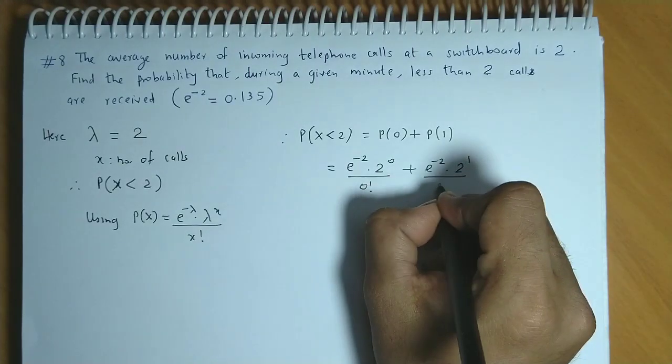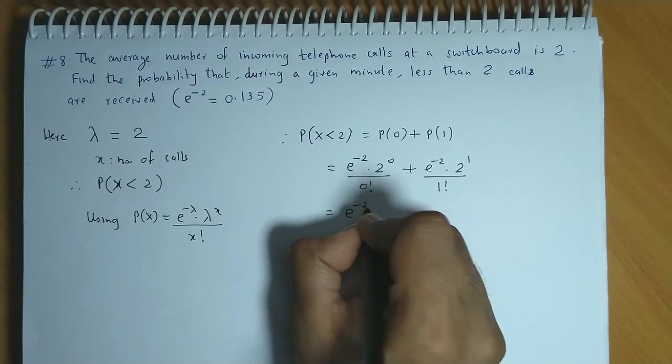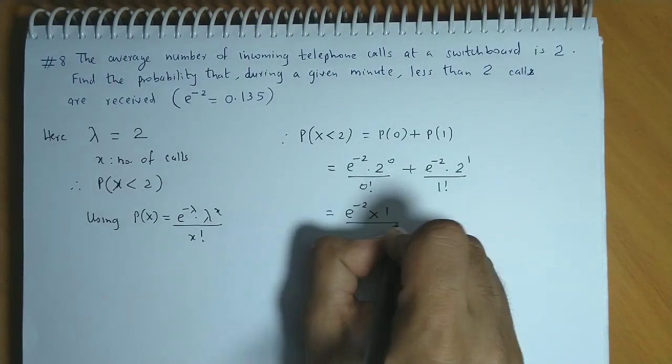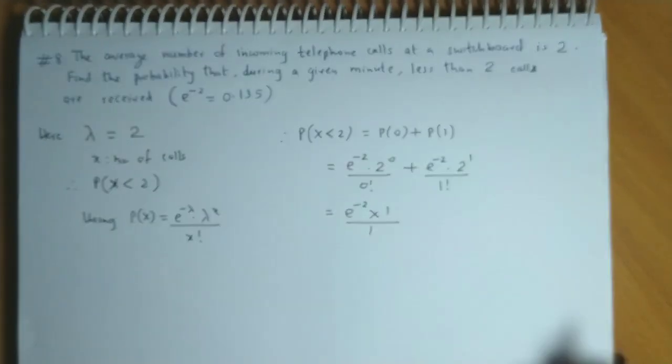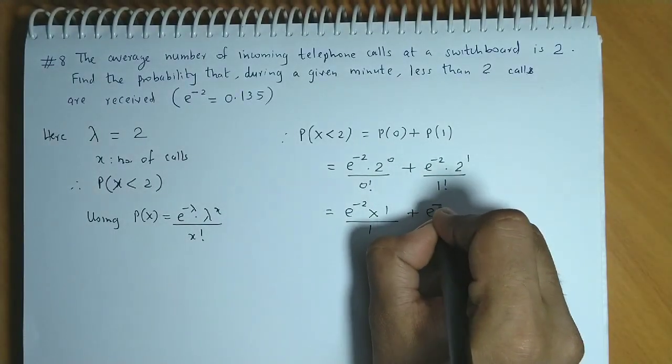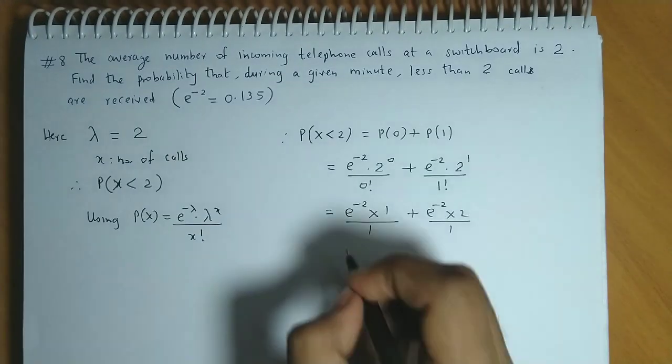x is 1 upon x factorial that is 1 factorial. Now this becomes e raised to minus 2 into 1 upon 1. Because 2 raised to 0 is 1, 0 factorial is also 1.